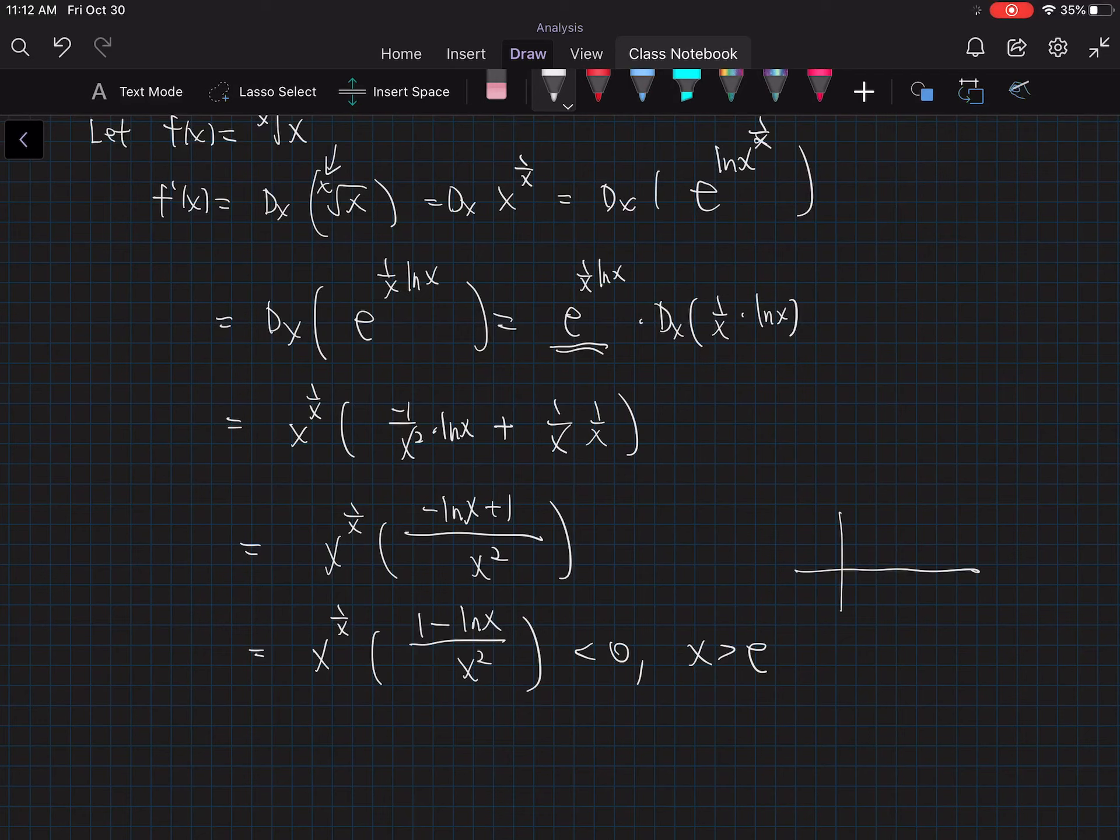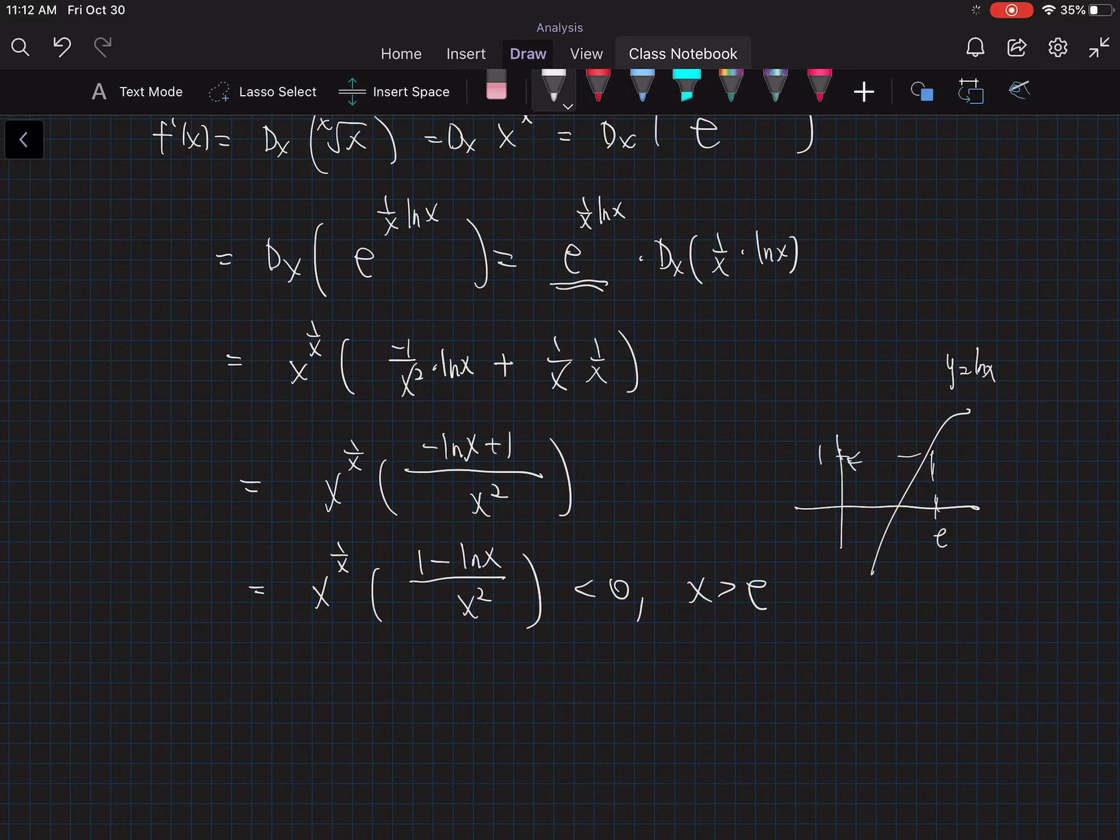So you can think about this, the function y equal to ln(x), at e equals 1, right here. All right. Look at that. So when x is greater than e, e is equal to 2.7 something. So this function is less than 0 when x is greater than 3.